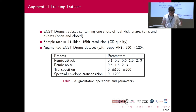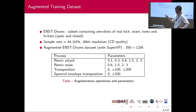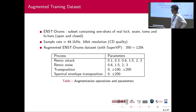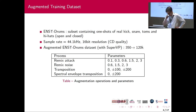Our training dataset is ENST Drums, which is quite small — three hundred and fifty samples of kick drum, snare drum, toms, and close and open hi-hats. That's not much, so we augmented it with SuperVP, with a remix of the attack, adding some noise to the tail, transpositions, and so on. We will see if it's any good a bit later.